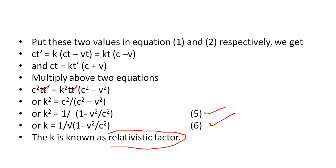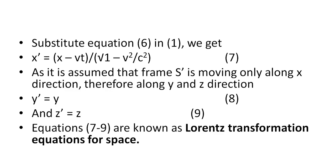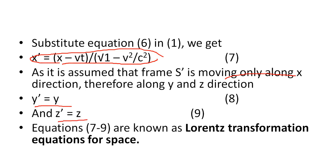k is known as the relativistic factor. Substituting equation 6 into equation 1 gives x' equals (x minus vt) divided by the square root of (1 minus v²/c²). Since S' is assumed to move only along the x-axis, along the y and z directions: y' equals y and z' equals z. Equations 7 to 9 are known as the Lorentz transformation equations for space.